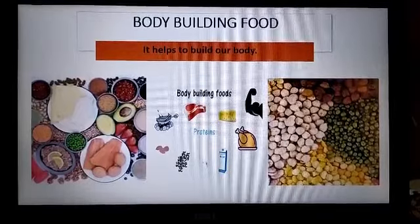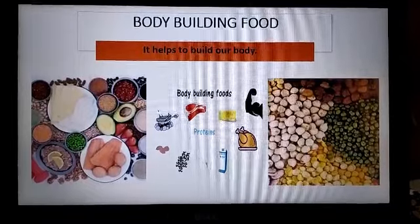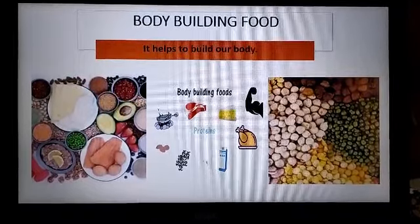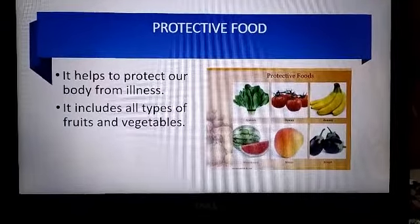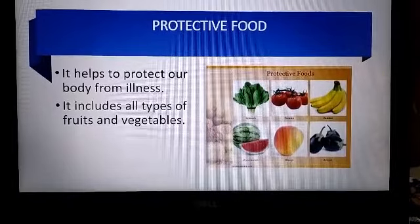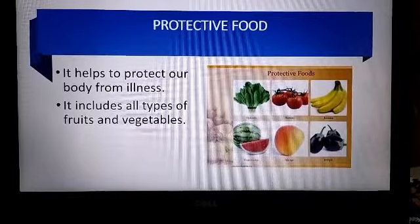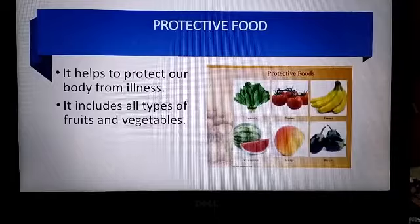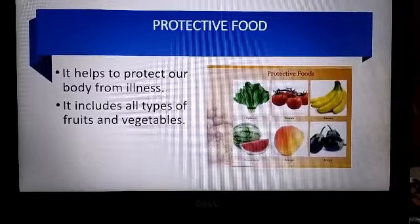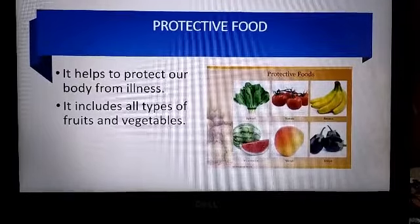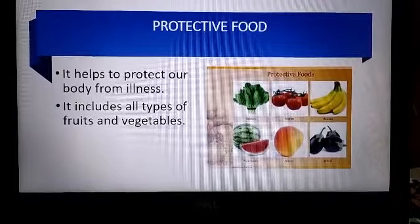Bodybuilding food helps to build our body. Such food includes pulses, meat, fish, egg, and milk. It helps build strong teeth and bones. Moving to the next kind of food — protective food. Protective food helps protect us from illness, keeping our body from getting ill. Protective foods include fresh vegetables and fruits. It is very important to eat all kinds of fruits and vegetables.